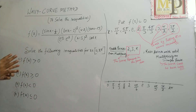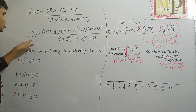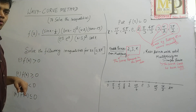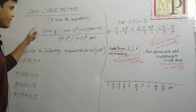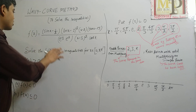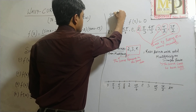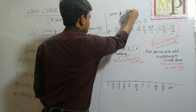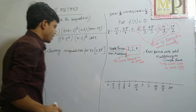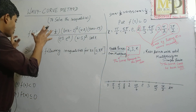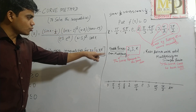Alright. So what is the first step? First of all, you have to put f(x) = 0. We have to solve this inequality in the interval 0 to 2π. So we take all those x for which the factors become zero within this interval.